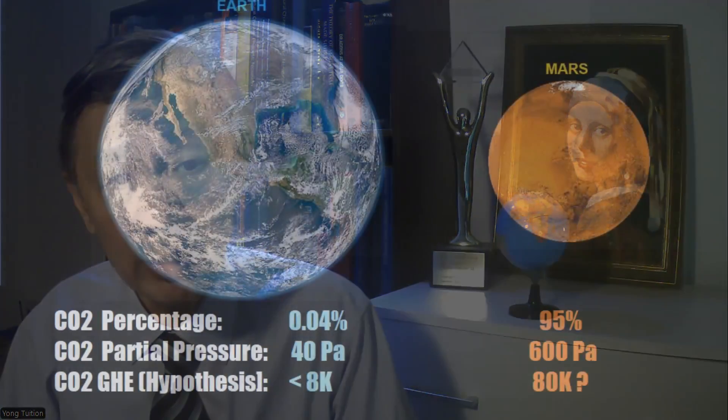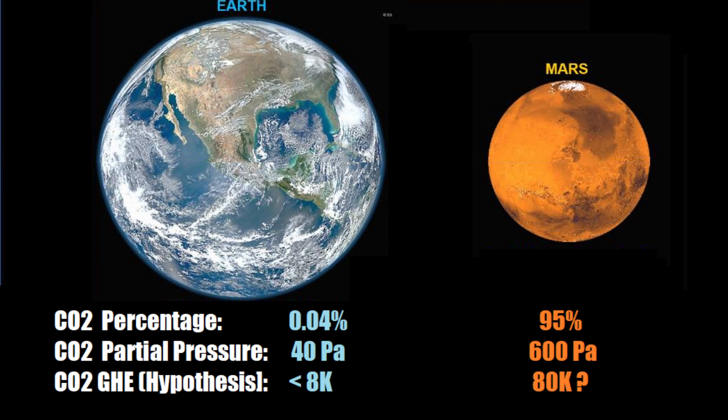But what is the case on Mars? Well, the estimated mean surface air pressure is between 400 and 700 Pascal, because 95% of the Martian atmosphere is made by CO2. It is reasonable to say that the partial pressure of CO2 on Mars is around 600 Pascal, or at least 10 times higher than the partial pressure of CO2 on Earth.